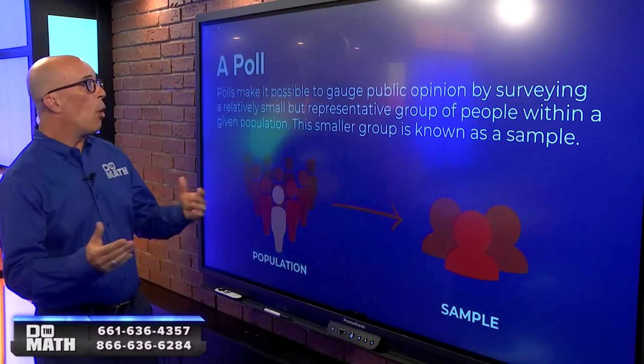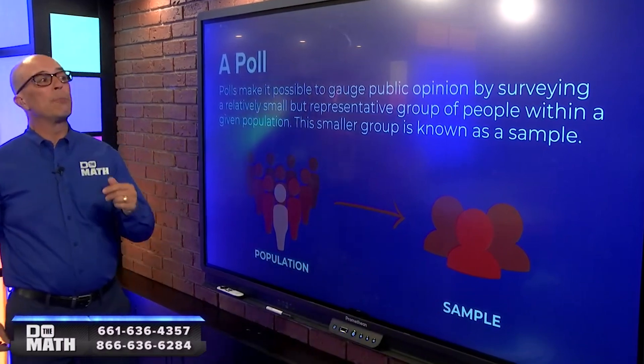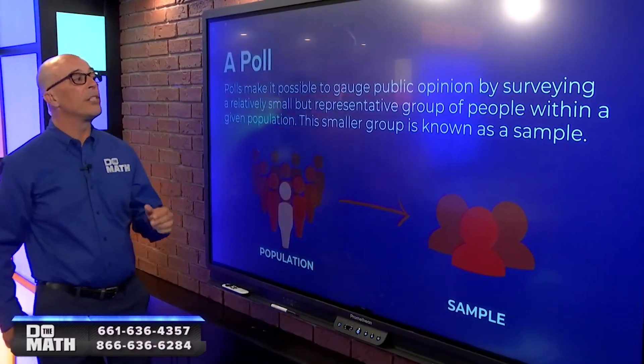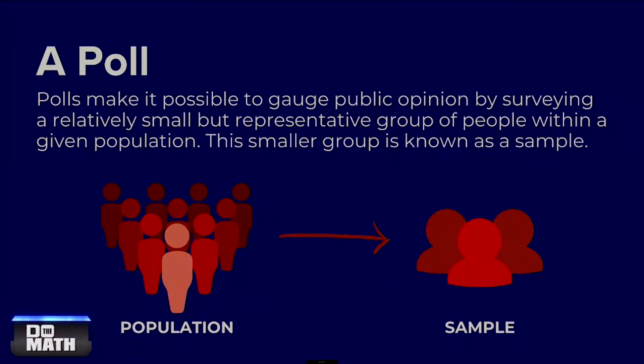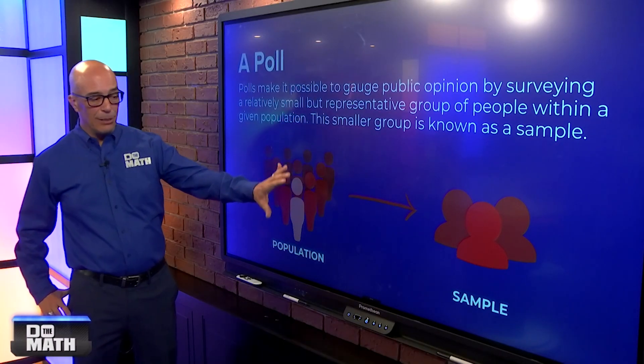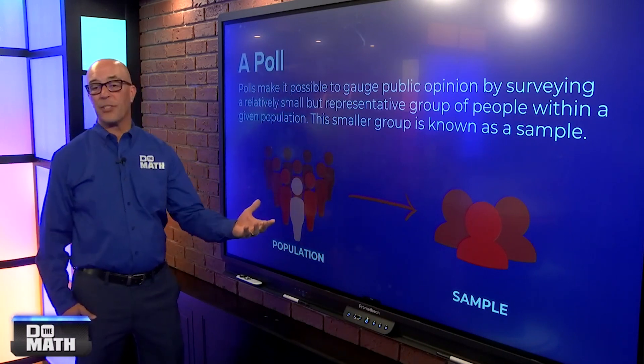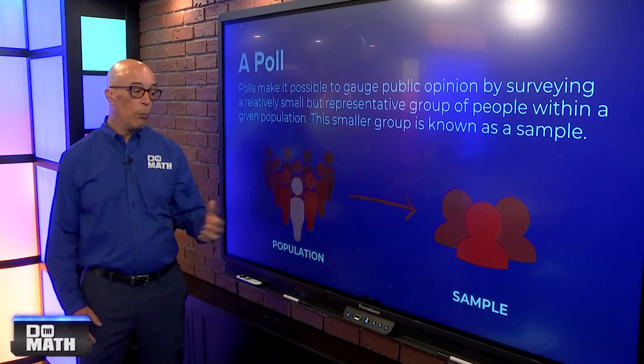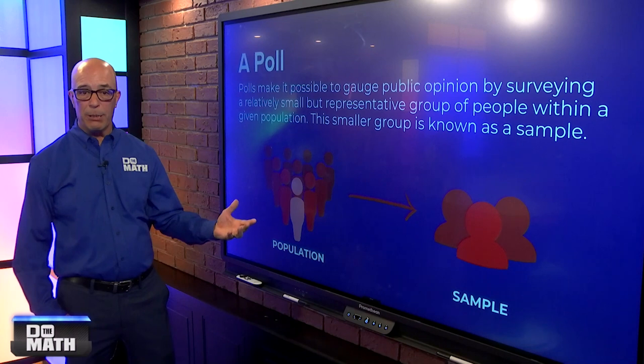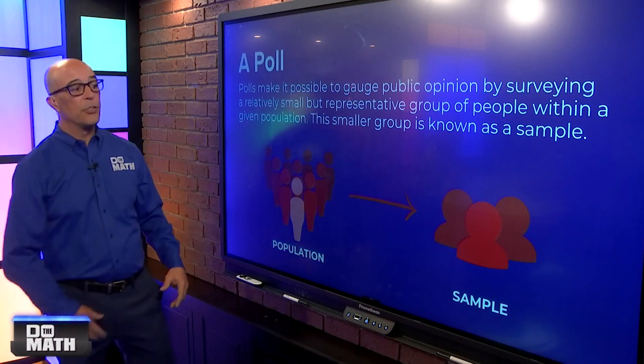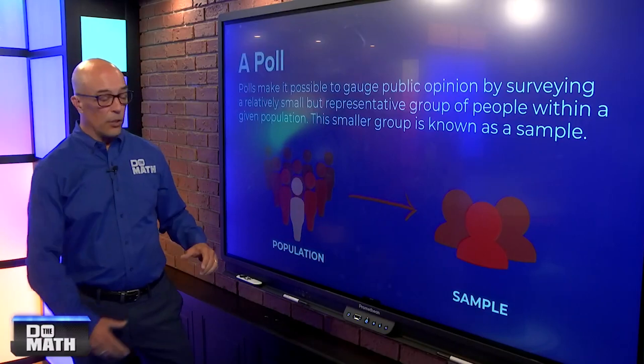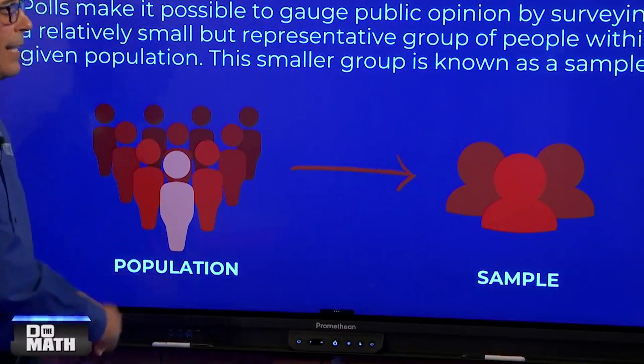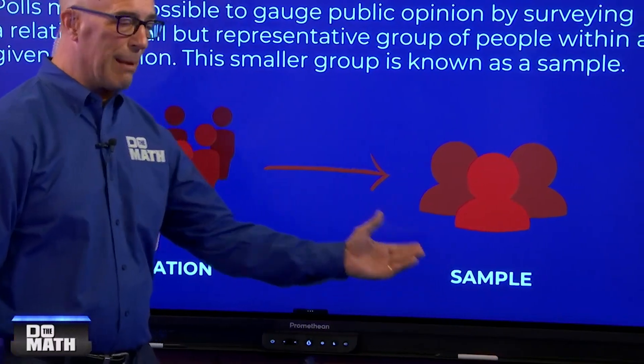So, a poll makes it possible to gauge public opinion by surveying a relatively small but representative group of people within a given population. The smaller group is known as a sample. So, if we have a big population, we can't, so let's imagine this is 100,000 people. We can't talk to all 100,000 people in the given time that we need to. So, we're going to take a sample of that 100,000 people. So, the population is everyone. The sample is part of that population.